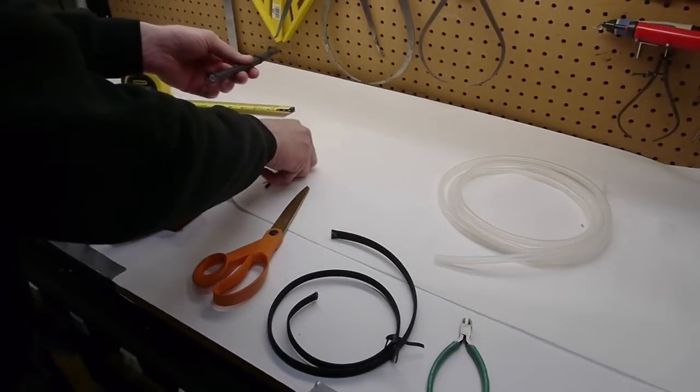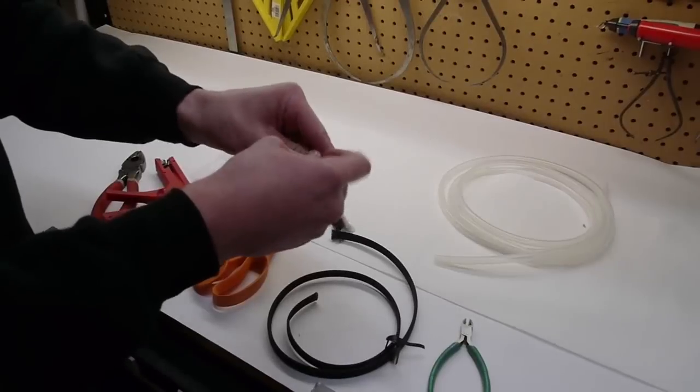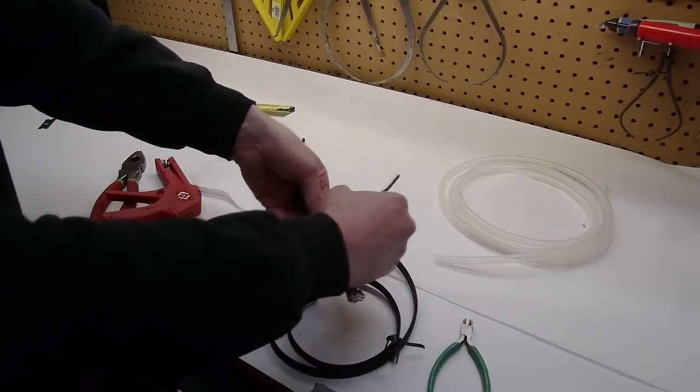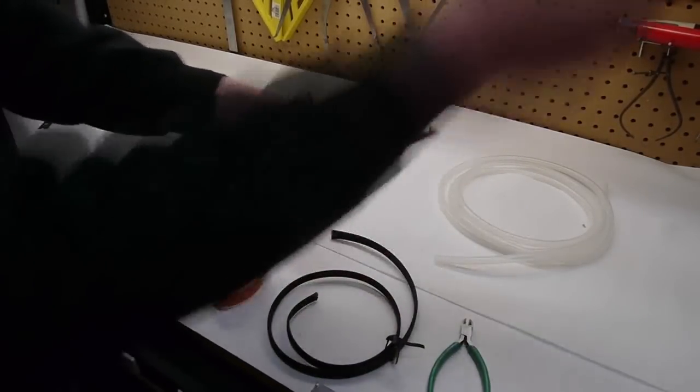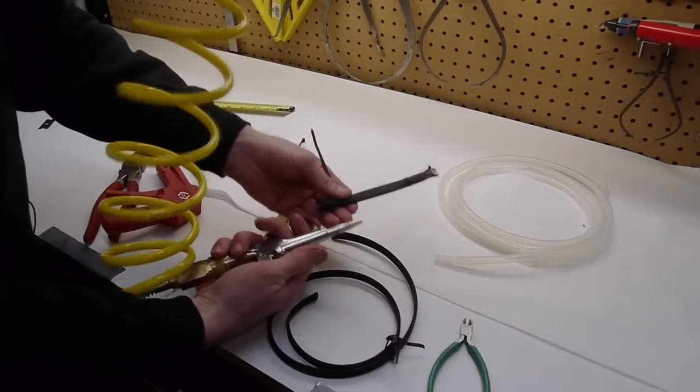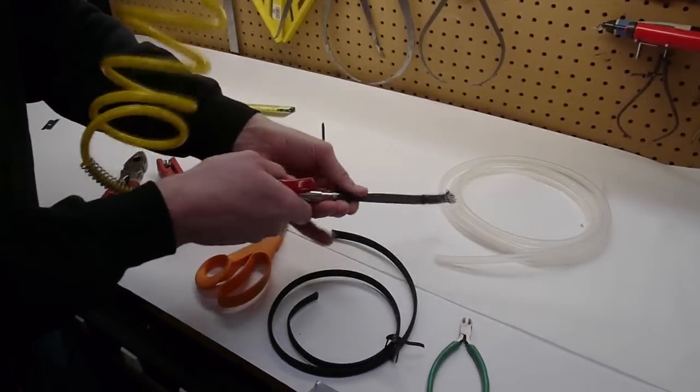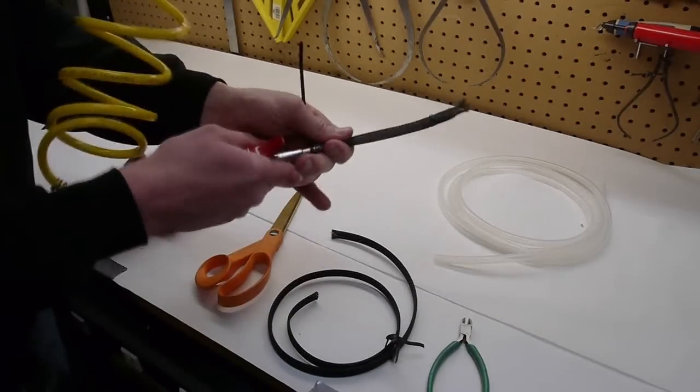Since we're just kind of testing this thing out, I'm not going to bother putting a decent end on the other side. I'm just going to kind of loosely put the wire tie on. The end of this air nozzle is tapered, so that when I put the taper in there, and then push the wire tie down... oops, I'll try that again.